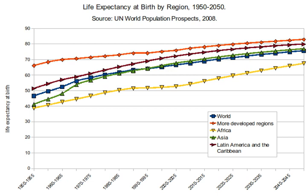In populations with high infant mortality rates, LEB is highly sensitive to the rate of death in the first few years of life. Because of this sensitivity to infant mortality, LEB can be subjected to gross misinterpretation, leading one to believe that a population with a low LEB will necessarily have a small proportion of older people. For example, in a hypothetical stationary population in which half the population dies before the age of 5 but everybody else dies at exactly 70 years old, LEB will be about 36, but about 25% of the population will be between the ages of 50 and 70.